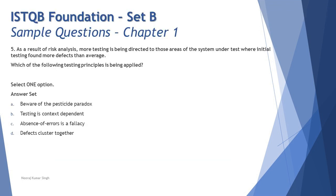The first question today is question number five: 'As a result of risk analysis, more testing is being directed to those areas of the system under test where initial testing has found more defects than average. Which of the following testing principles is being applied here?' The most important thing before looking at the options is to recall your knowledge and get to the answer yourself first, because we have only seven standard principles.